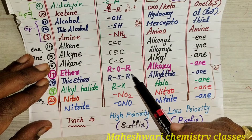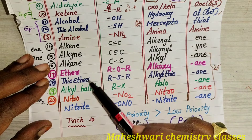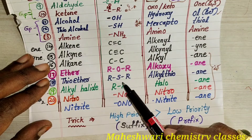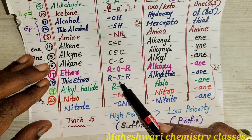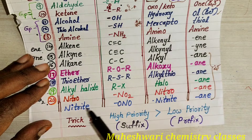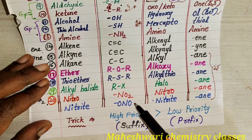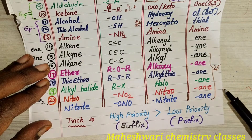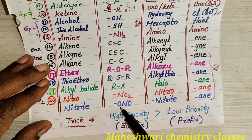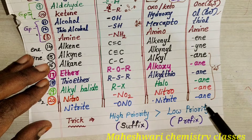For ether (R-O-R): prefix is alkoxy, suffix is ane. From ether to nitro, all suffixes are ane. Thioether (R-S-R): within the place of oxygen, sulfur is there, so prefix is alkylthio, suffix is ane. Alkyl halide (R-X): prefix is halo, suffix is ane. Nitro (NO2): prefix is nitro, suffix is ane. Nitrite: here also nitrogen and oxygens, but oxygen came in front of nitrogen, so prefix is nitrite, suffix is ane.